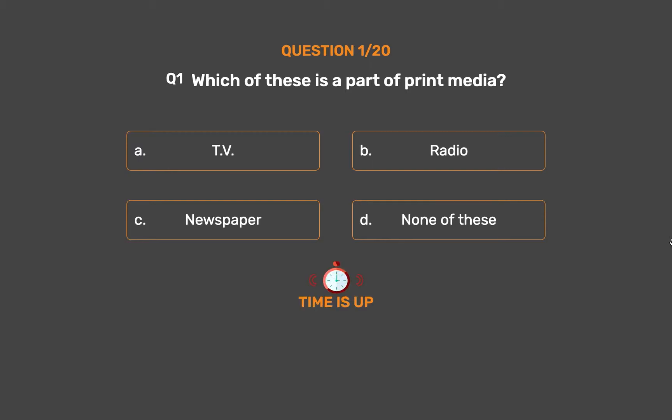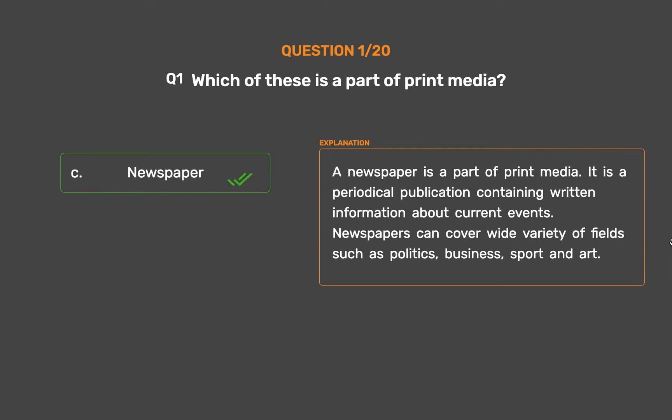The correct answer is Option C: Newspaper. A newspaper is a part of print media. It is a periodical publication containing written information about current events. Newspapers can cover a wide variety of fields such as politics, business, sport and art.